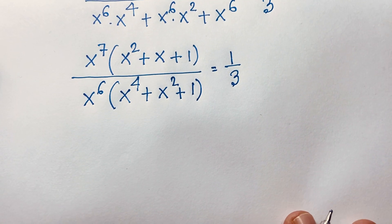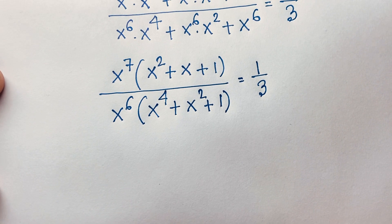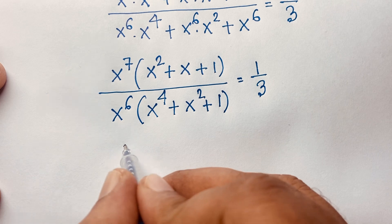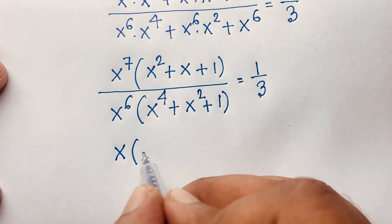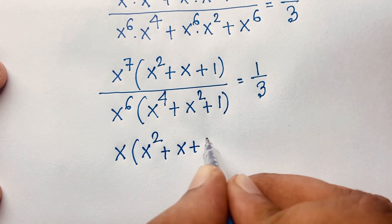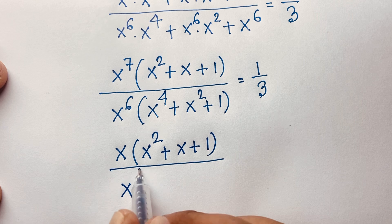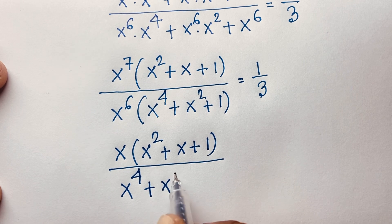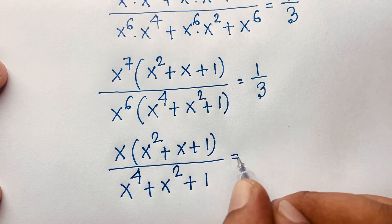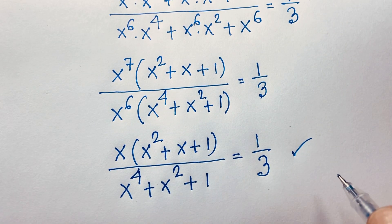Dividing x to the power 7 by x to the power 6 gives x. So the expression becomes: x times (x squared plus x plus 1) over (x to the power 4 plus x squared plus 1) equals 1 over 3. I will solve this step by step.